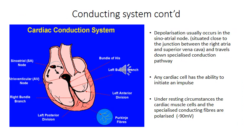Normally, the impulse originates from the sino-atrial node, and then depolarizes the atrial muscles. Then it is transmitted to the atrioventricular node, and then it passes to the bundle of His, which then divides into right and left bundle branches. The impulse then passes through those branches to the Purkinje fibers and the ventricular myocardium.